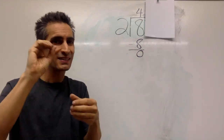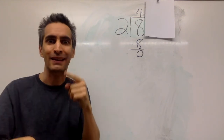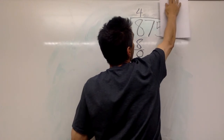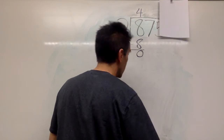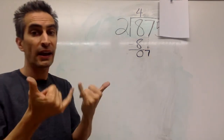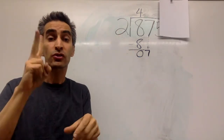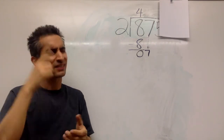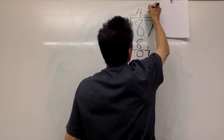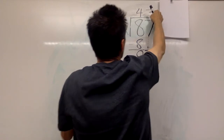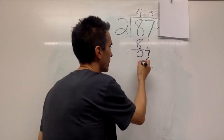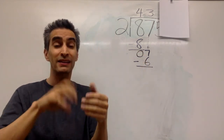Now, two goes into zero how many times? It can't. That means we've got to look at the next number to the right — seven. Bring the seven down. How many times does two go into seven? Let's think about this. Two times two equals four. Two times three equals six — three times. We multiply again: two times three to get six. Now, what are we going to do? We've got to subtract again. Seven minus six equals one.